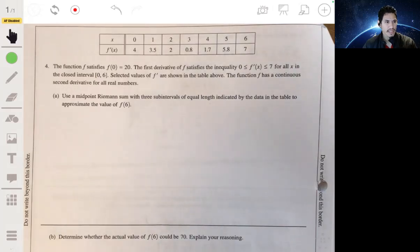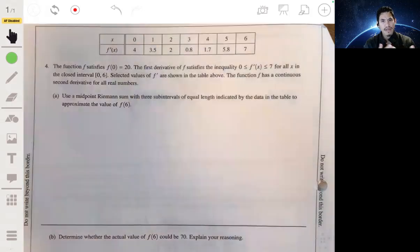So adding up these areas of the rectangles with heights f of x will give you an idea of essentially the total length of f.